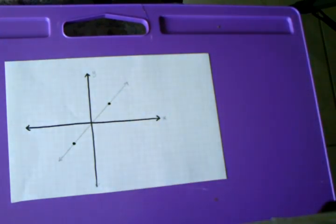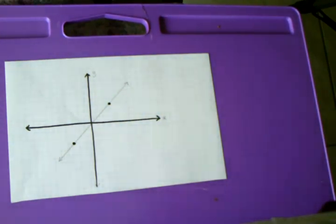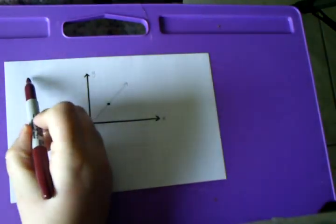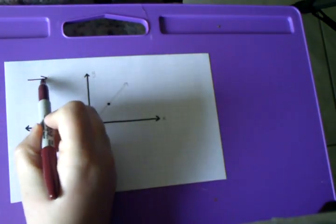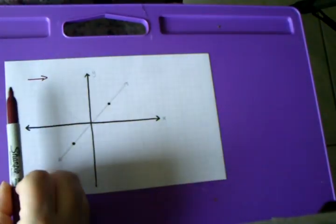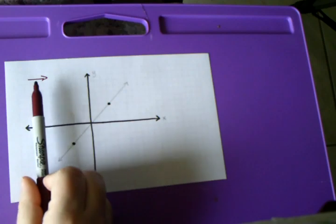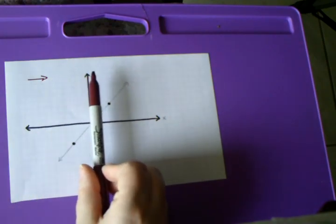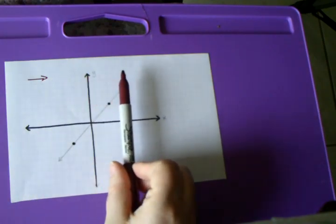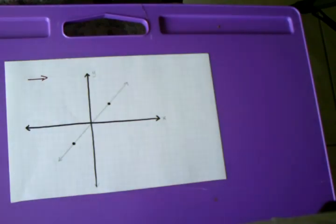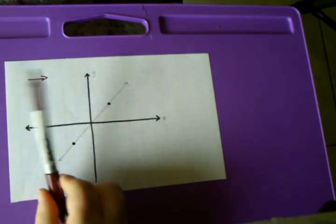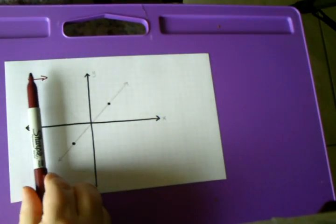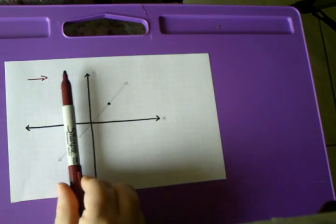This graph — we read graphs just like we read a book. We always move from the left to the right. So I always start moving in this direction. As I move in this direction and look at my graph, my line is going up. That's how I know that this slope is positive, because the line is going up as I move from left to right.